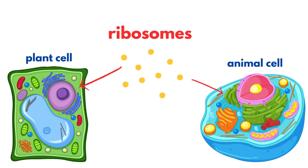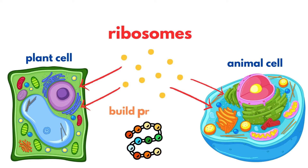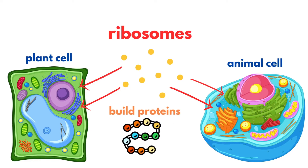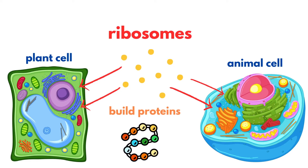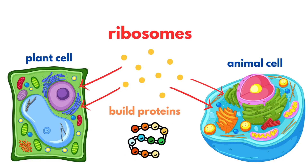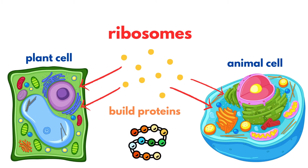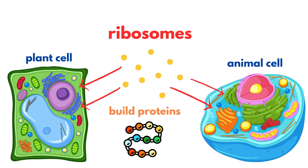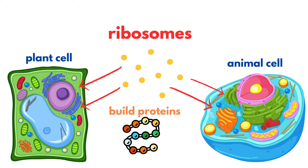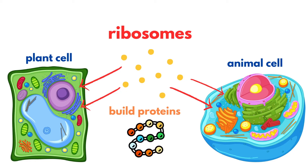Speaking of ribosomes, these tiny structures are the protein factories of the cell. They can be found floating freely in the cytoplasm or attached to the rough endoplasmic reticulum. Ribosomes are vital for building proteins in both plant and animal cells.